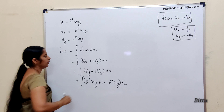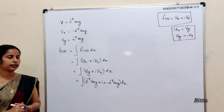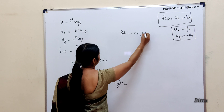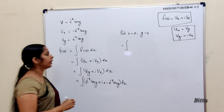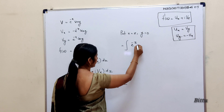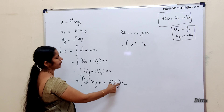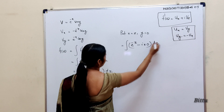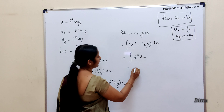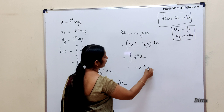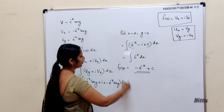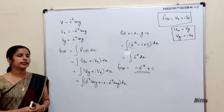Applying the Milne-Thomson method, we put x = z and y = 0. When y = 0, cos(0) = 1, so the first term becomes e^(−z). When y = 0, sin(y) = 0, so the second term becomes 0. So it is integral of e^(−z) dz. The integral of e^(−z) is −e^(−z). Adding a constant after integration, f(z) = −e^(−z) + c. This is the required analytic function.